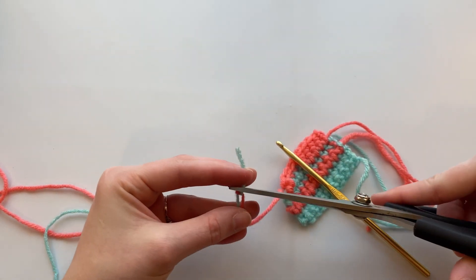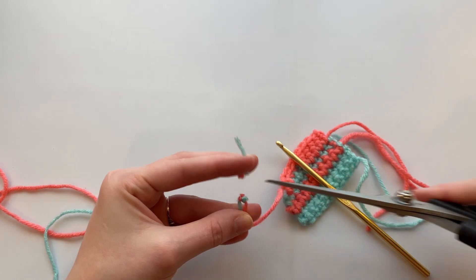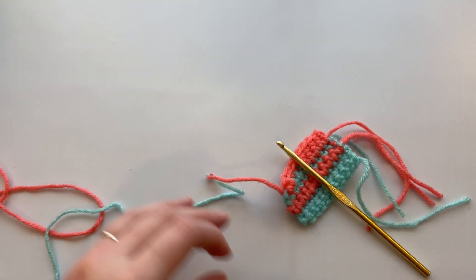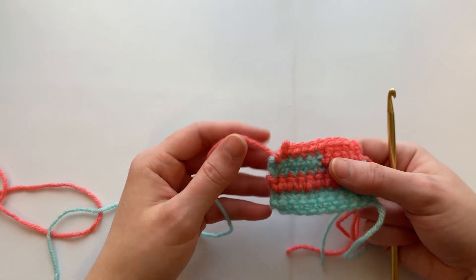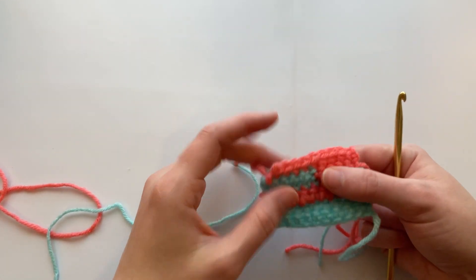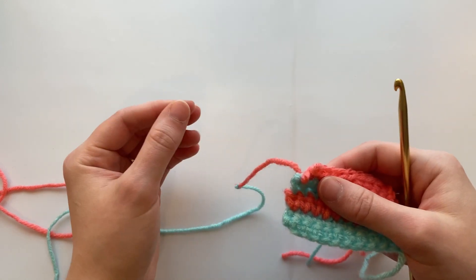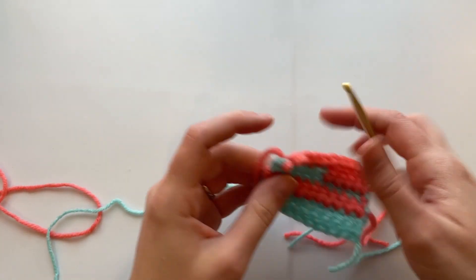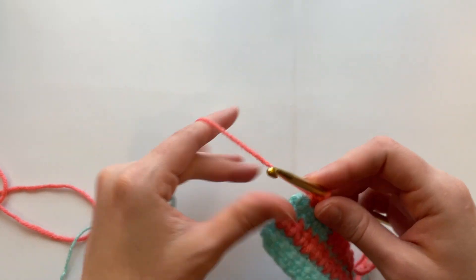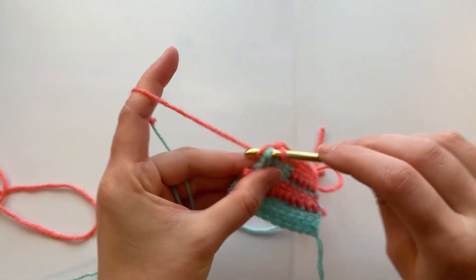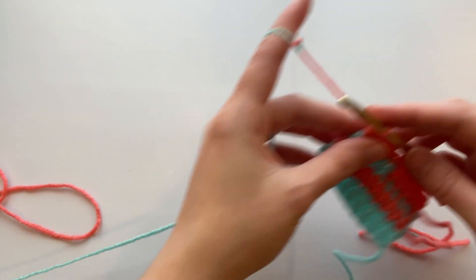And of course with the scrap yarn cardigan it doesn't matter where what color ends up where, so I just do it at random intervals. But whenever I do want the color to kind of like stop, I'll crochet part of it, cut a little tail, unwind some of it so I have some length to work with. That way when you move on, it kind of stops where you want it to.